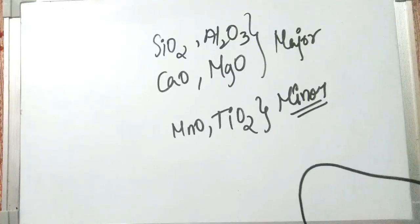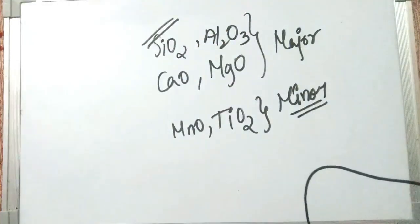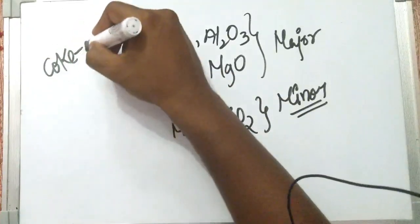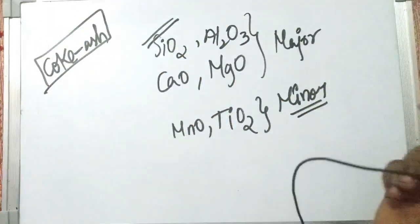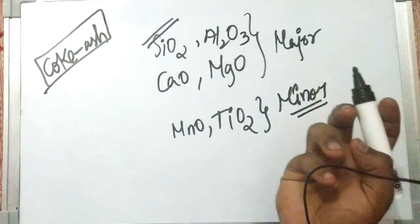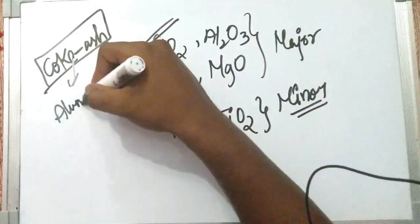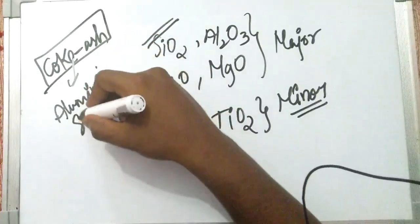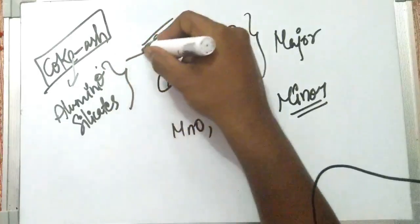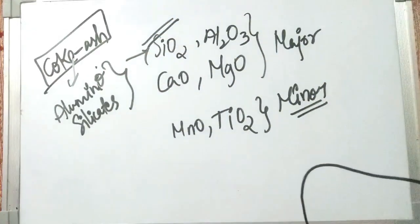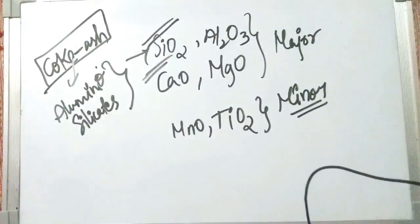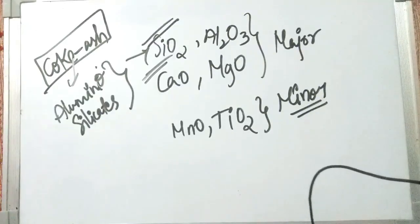Generally, SiO₂ and Al₂O₃ come from the gangue — the impurities present in the iron ore — and also from coke ash. Coke ash is the residue from combustion of coke, which contains alumino-silicates that dissociate into SiO₂ and Al₂O₃. CaO and MgO come from the fluxes — limestone and dolomite — that are added to the blast furnace.